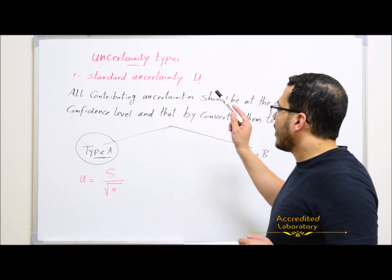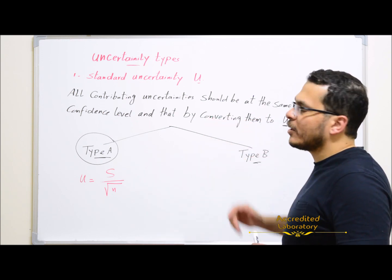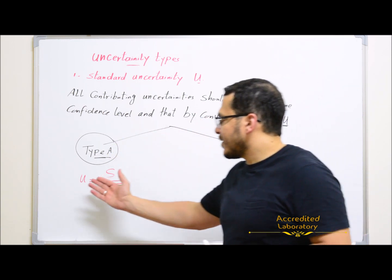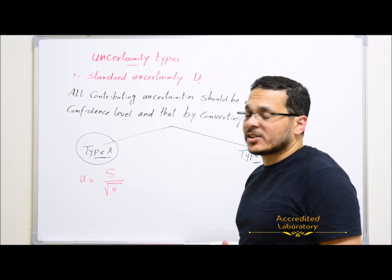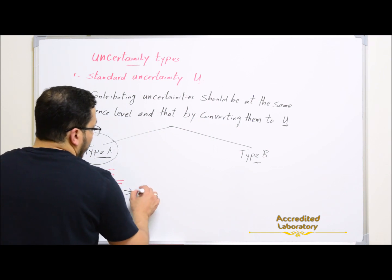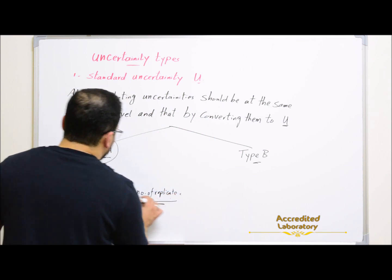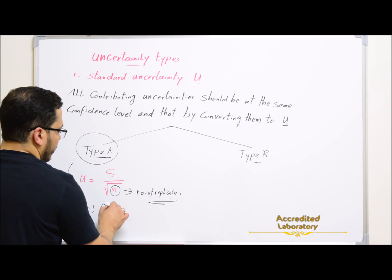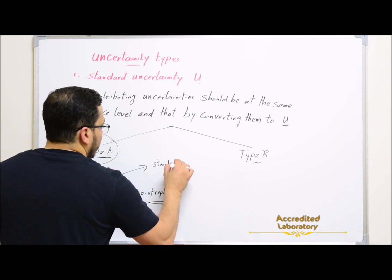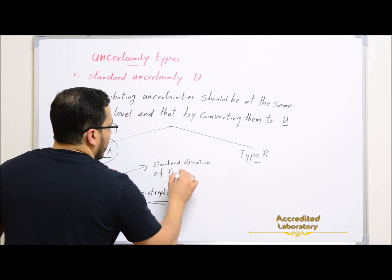All contributing uncertainties should be at the same confidence level, and that will be done by converting them to standard uncertainty. In case of Type A evaluation, standard uncertainty equals standard deviation divided by the square root of n, where n is the number of replicates, because only in this case do you have repeatability. This gives you the standard deviation of the mean.